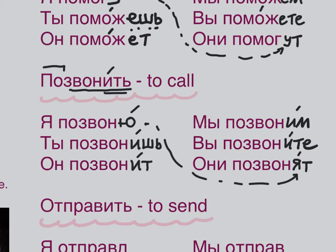If you want to ask a question: ТЫ ПОЗВОНИШЬ МНЕ? ОН ПОЗВОНИТ ТЕБЕ? ОН ПОЗВОНИТ МНЕ? A normal statement: Я ЕМУ ПОЗВОНЮ — drop the intonation. That's how you identify questions from normal statements.